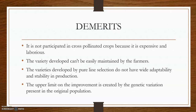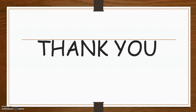The main demerits are that new genotypes cannot be developed by this method because it only involves isolation of superior genotypes from a mixed population. It is applicable only to self-pollinated crops and not to cross-pollinated species. Varieties developed by pure line selection also have poor adaptability and a narrow genetic base, making them more prone to attack by new diseases.